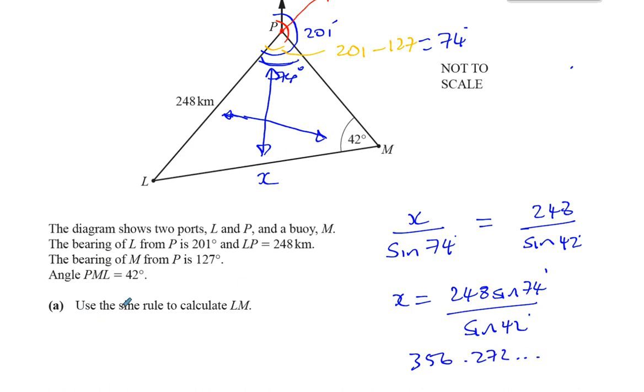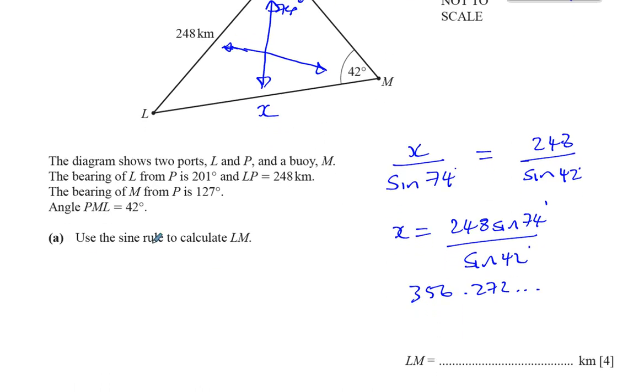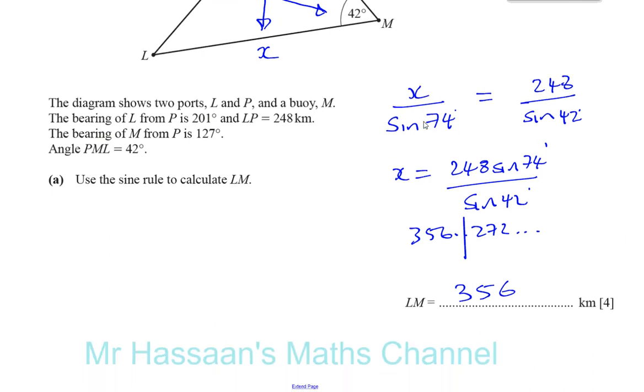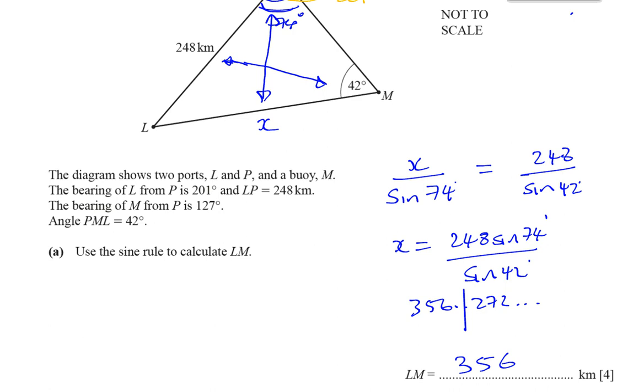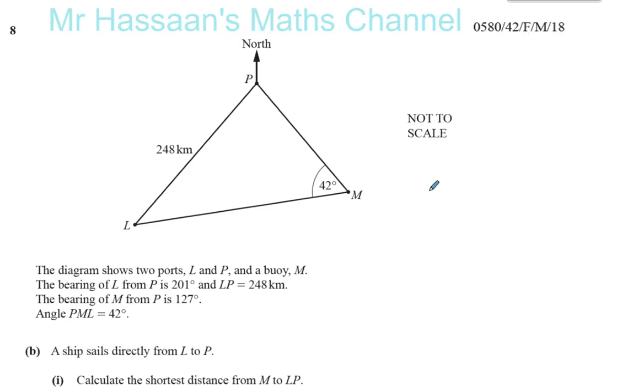There's no mention of any rounding issues. It just says calculate. It's a length calculation, so it should be to three significant figures, so LM is equal to 356 kilometers. That's question 8, part A. I'm going to do part B as well, straight away.